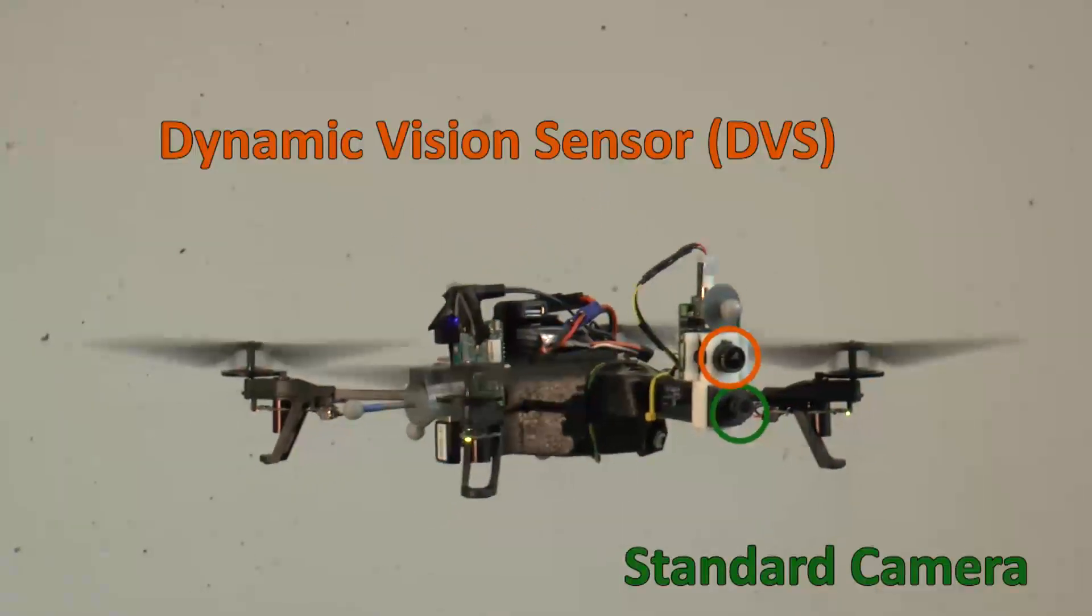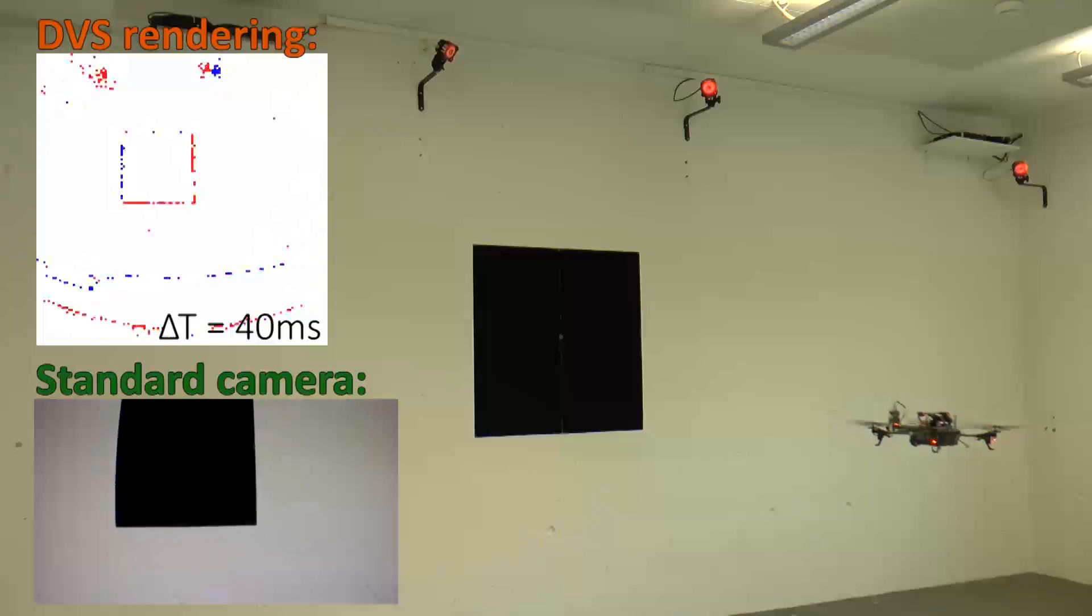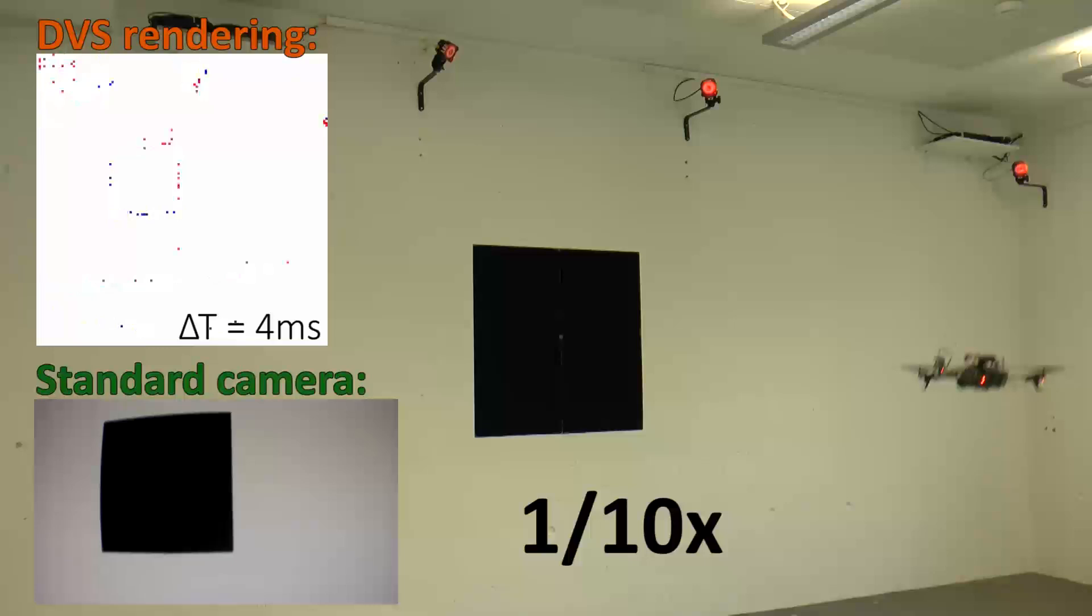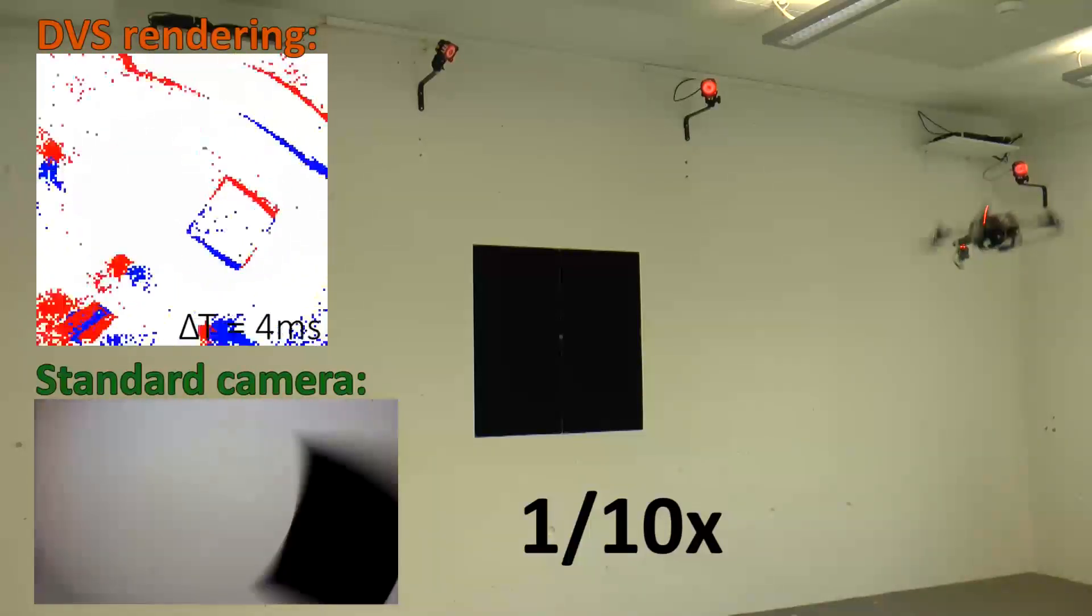In the following experiment, we mounted the DVS and a standard camera on a quadrocopter and performed flips. When we replay the flips in slow motion, we can clearly see motion blur effects on the standard camera.